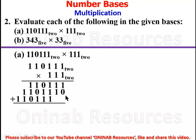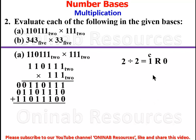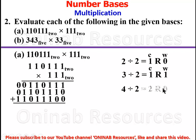We fill in the spaces for alignment. Before adding, we note that some column sums may reach 2, 3, 4, or even 5. For reference: 2 divided by 2 gives 1 remainder 0; 3 divided by 2 gives 1 remainder 1; 4 divided by 2 gives 2 remainder 0; 5 divided by 2 gives 2 remainder 1. These will guide our binary carries.